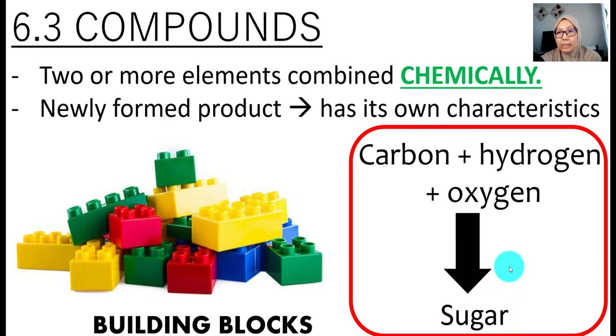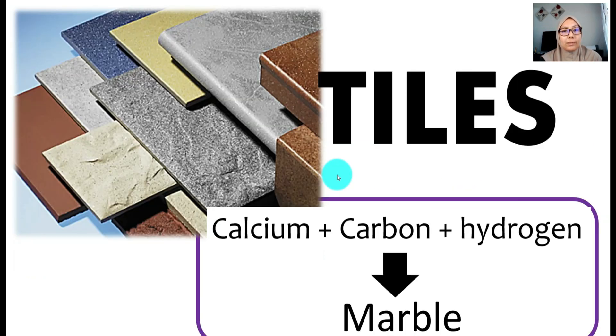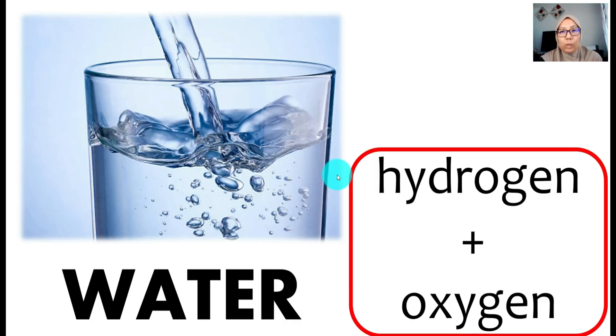For example, sugar is made up of carbon, hydrogen, and oxygen. Marble is made up of calcium, carbon, and oxygen. Water is made up of hydrogen and oxygen.